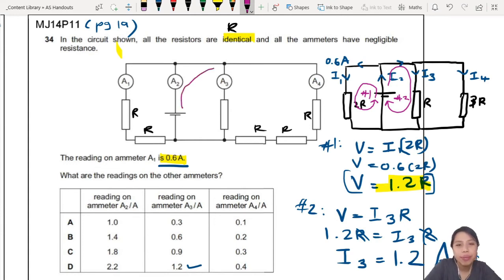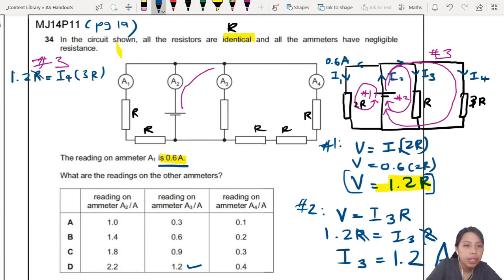Okay, but since we're not in normal exam, you'll find, confirm this is correct, you just circle D already. But since now we're problem solving, let's find the rest so we can convince ourselves. Next one, you draw a loop from the battery up, this is loop number three. You have battery up, V equals to I4 times 3R. But again, your battery, you know the equation for it is 1.2R. So divide both sides by R, I4 is 1.2 divided by 3, 0.4 ampere.